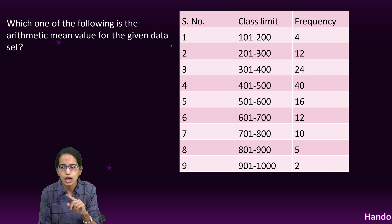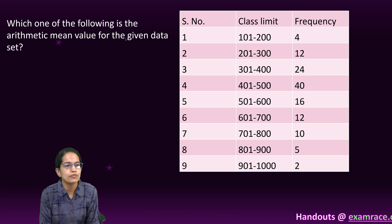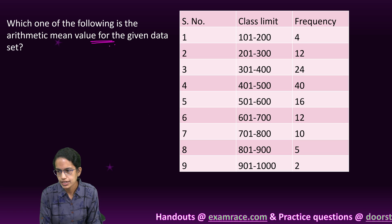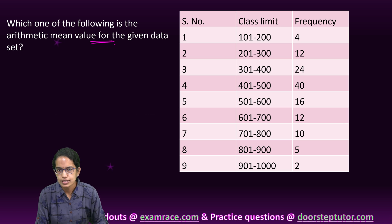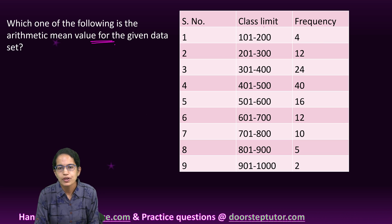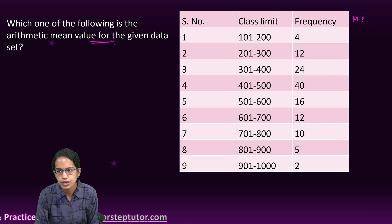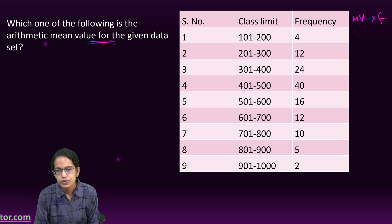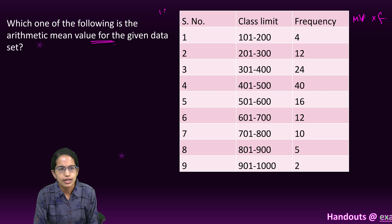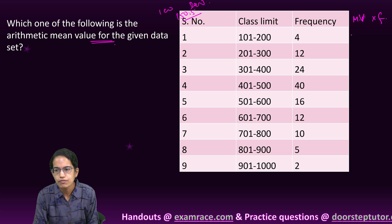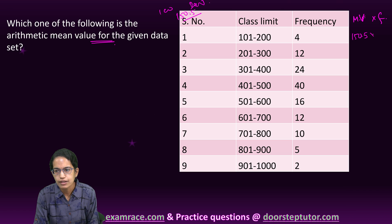The next question: find the arithmetic mean value for the given data. To calculate the arithmetic mean, I find the mid value for each class. For the class 100-200, the mid value is 150.5. The mid value is then multiplied by the corresponding frequency for each class.